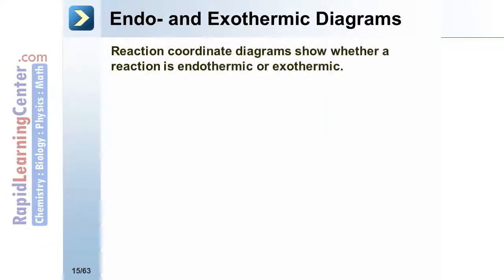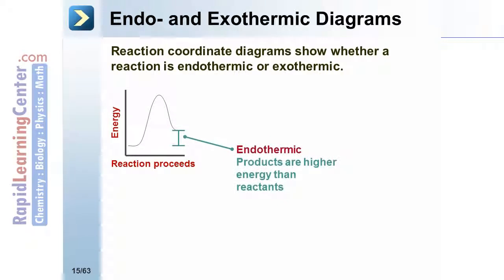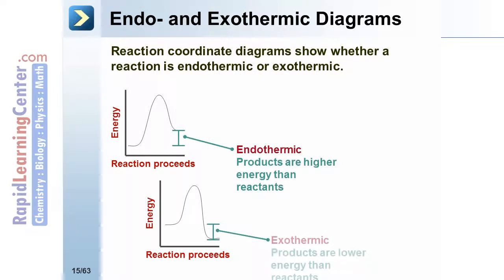Reaction coordinate diagrams show an endothermic or exothermic reaction. In this case, the products have more energy. This is an endothermic reaction. In this example, the products have less energy. They lost energy as compared to the reactants. This is an exothermic reaction.